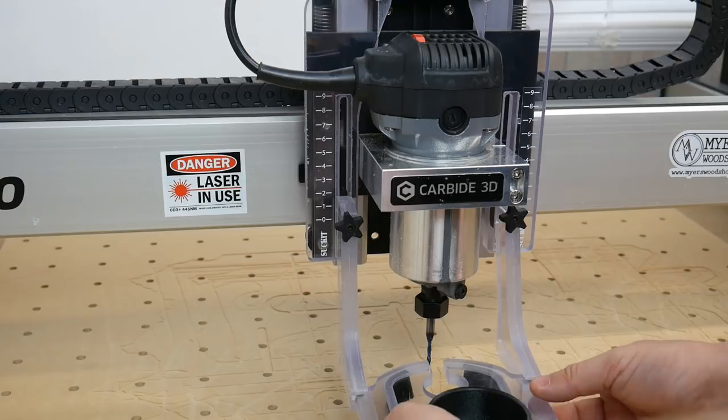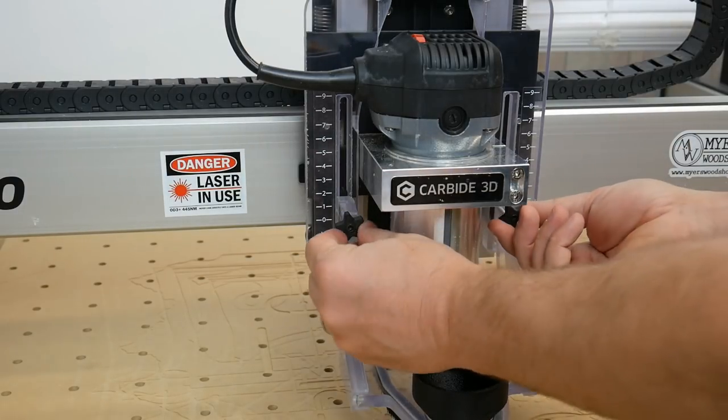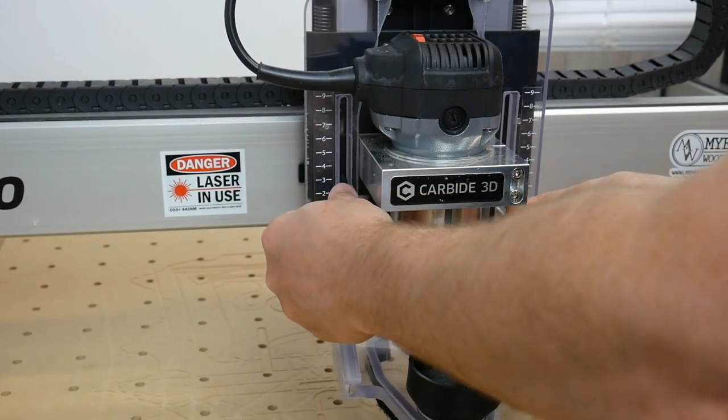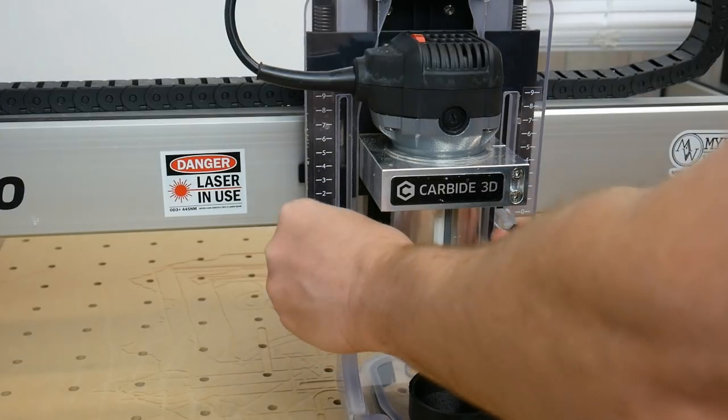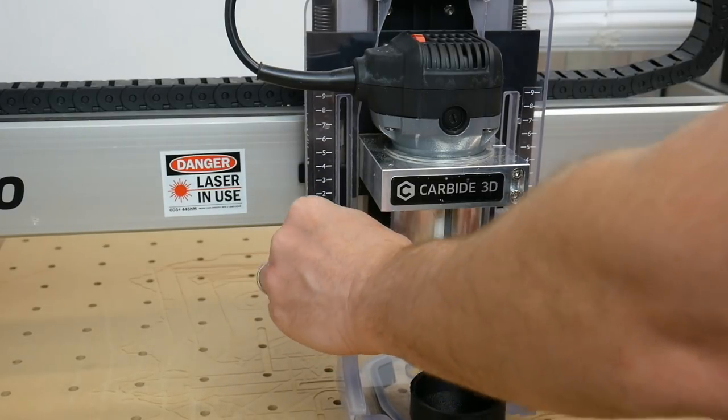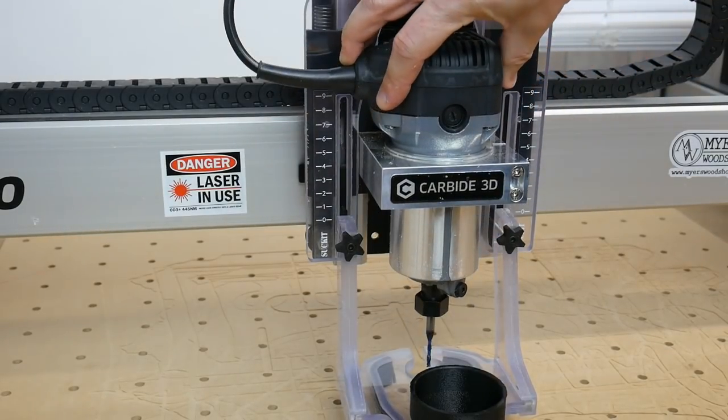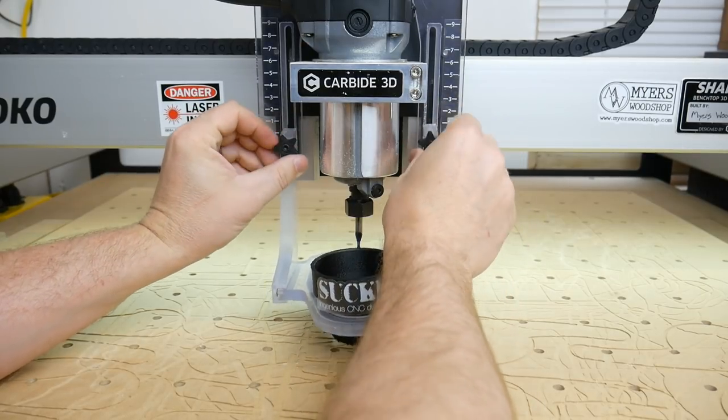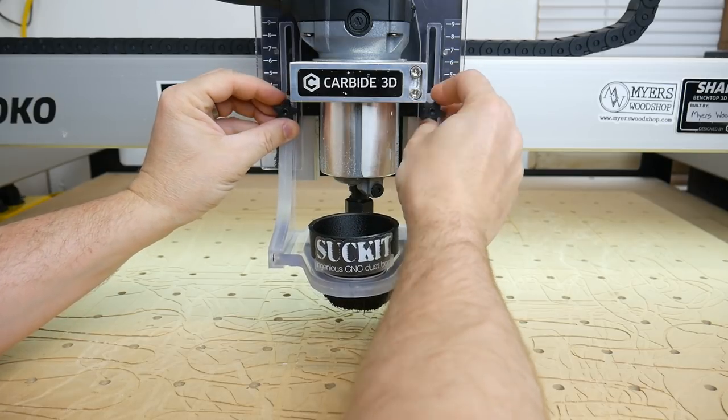Once we've gotten both support arms to about the same height. We'll go ahead and slip our dust shoe into the slots. And everything should align perfectly. We can loosen the thumb screws and raise and lower our shoe to the height we need it. Now anytime you need to you can raise and lower the dust boot according to how thick your material is you're cutting.